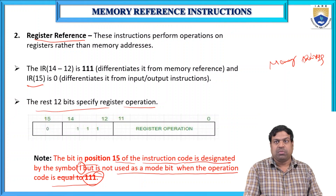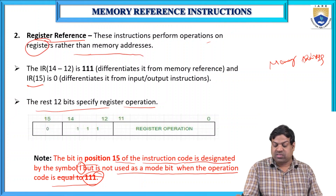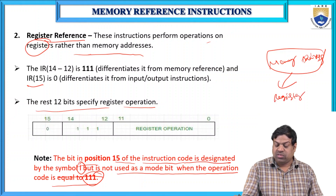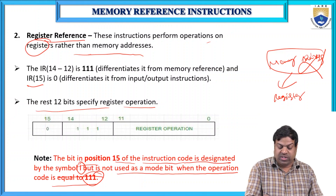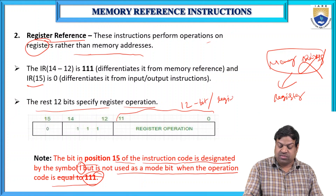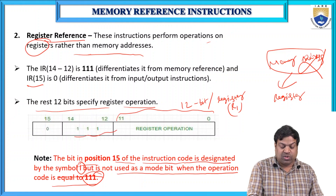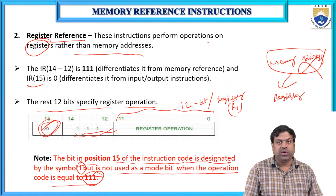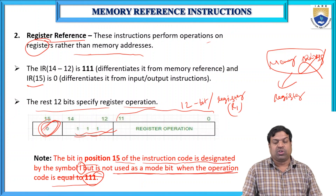In register reference instructions, we do not define a memory address. Instead, bits 0 to 11 specify the register operation — such as R1, R2 — and bits 12 to 14 are 111. If the opcode is 111, bit 15 (i) is not used as a mode bit; instead it marks this as register reference with i = 0.